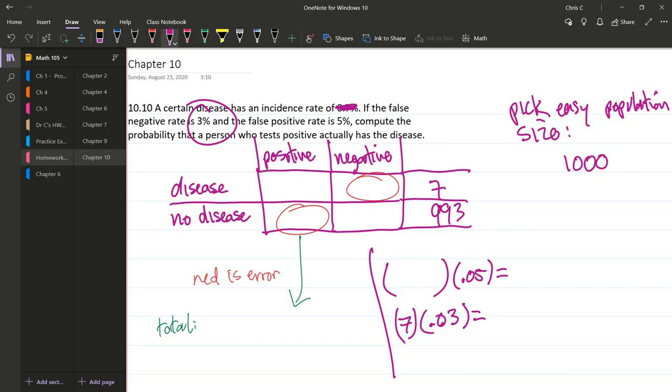The false negative rate is 3%. Where's the false negative? I have a red circle here - negative. What does false mean? It means you test negative but you have the disease. So that's 3%. So that means out of the seven people, some small portion are going to have an incorrect test here. How many?